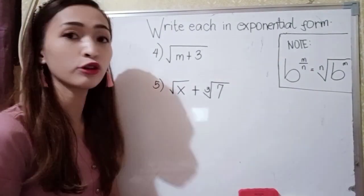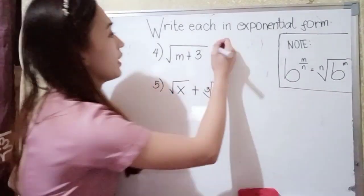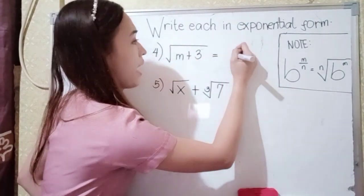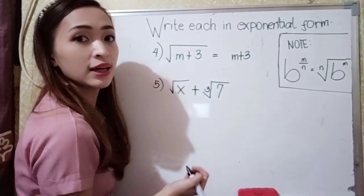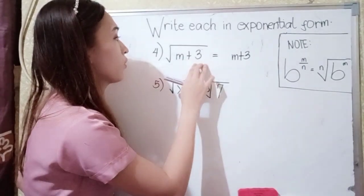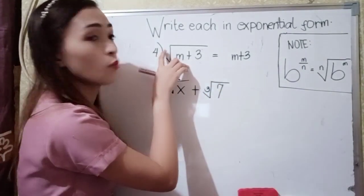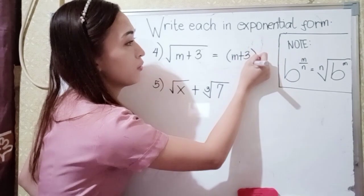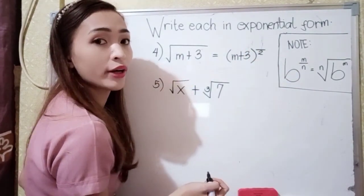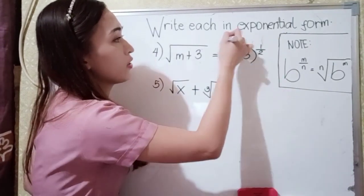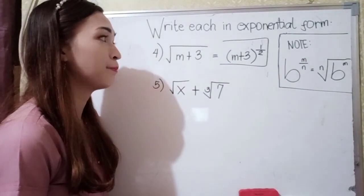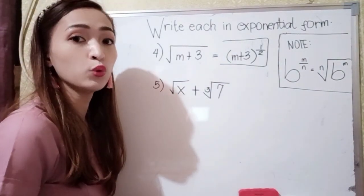For number 4, we have the square root of (m plus 3). Our radicand m plus 3 becomes our base. Since they are both under the square root, we use a grouping symbol, 2 as our denominator, and 1 as our numerator. So our answer for number 4 is (m plus 3) raised to 1 half.